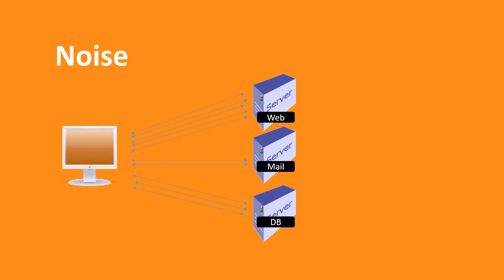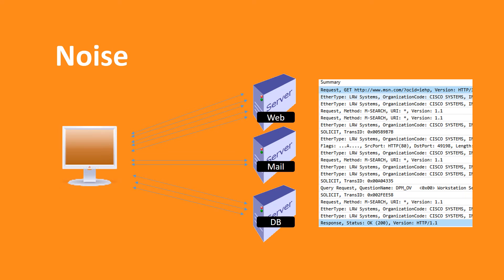A major difficulty, especially with network traffic, is noise. With hundreds of different conversations occurring, even from just one machine, there can be lots of irrelevant traffic. As data appears on the wire, it's not well organized for you by default, and related messages can be adjacent, but more likely intermixed with other conversations and network traffic.